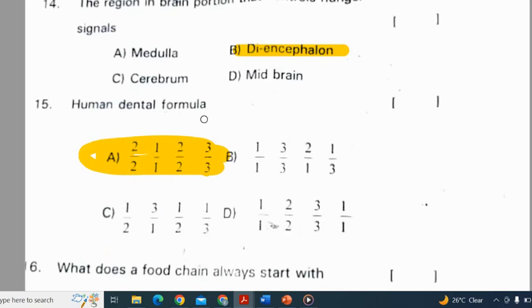The region in brain that controls hunger: hypothalamus. Human dental formula: 2-1-2-3. What does a food chain always start with? The food chain always starts with producers. Identify the natural resource from the following: solar power or solar energy.